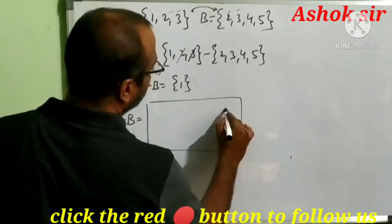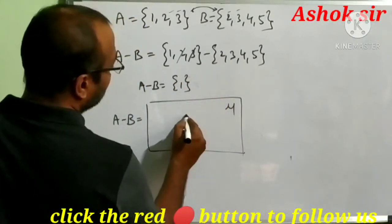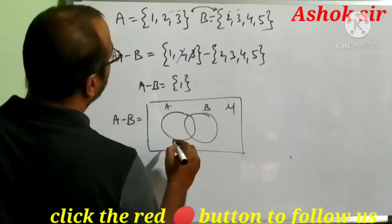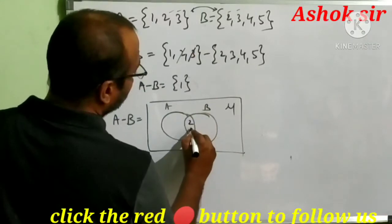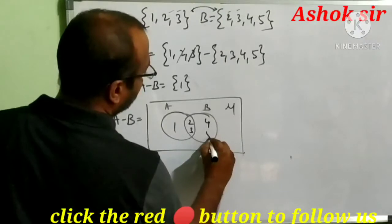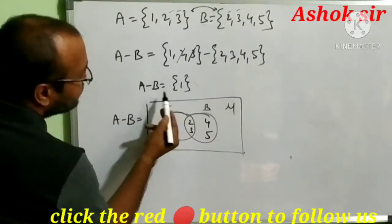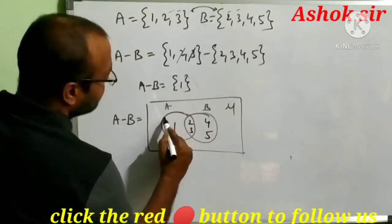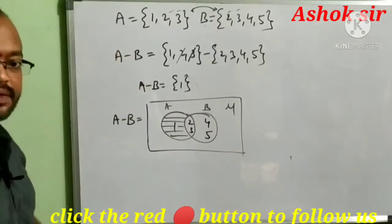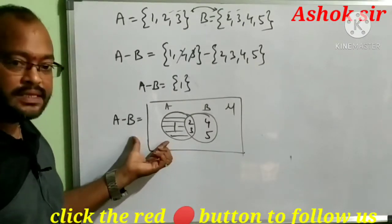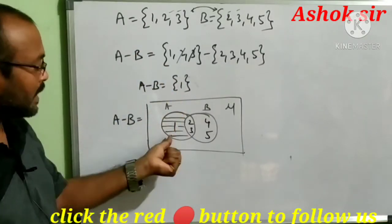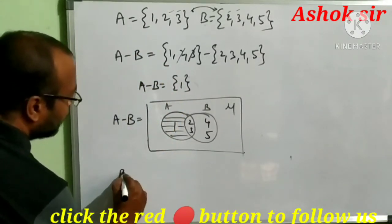We take the universal set with overlapping circles since common elements exist. A contains 1 in its exclusive part and the common elements 2, 3 in the middle; B contains 4 and 5 in its exclusive part. A minus B means only the A-exclusive part, so we shade that region — which contains 1. This is how we solve the problem using Venn diagram; the ordinary simplification also gives us A minus B = {1}.